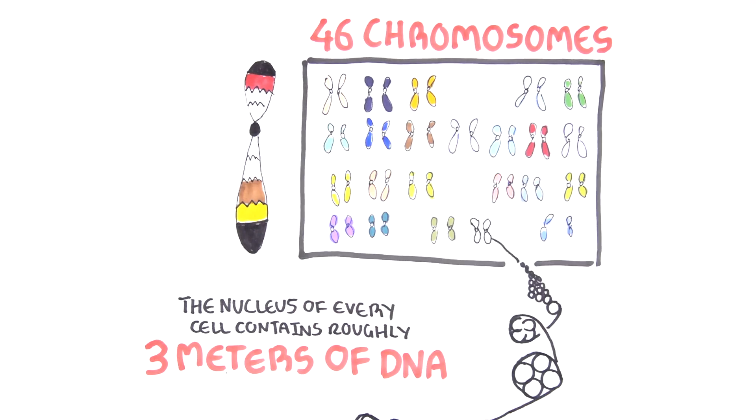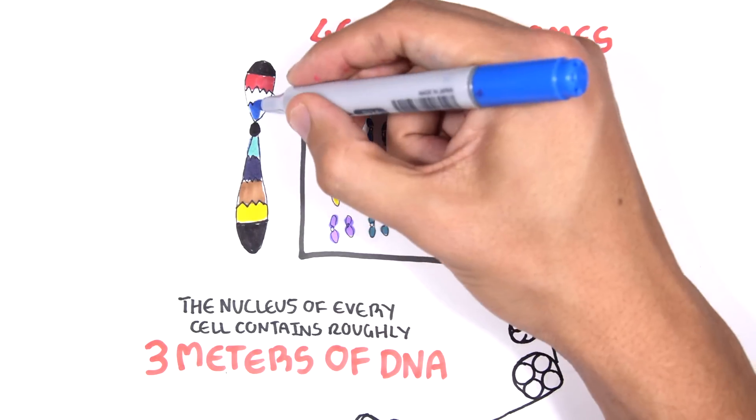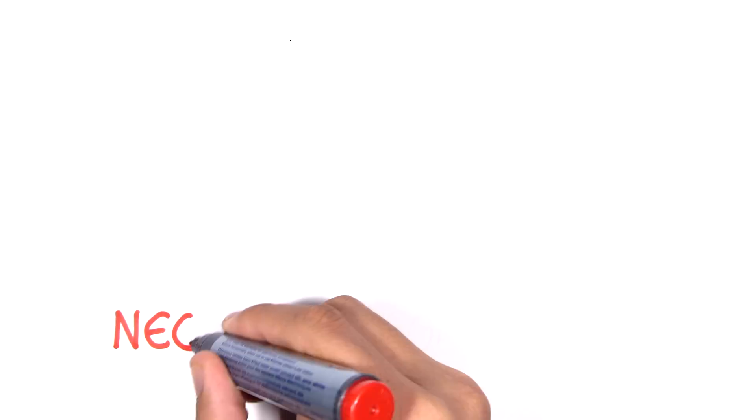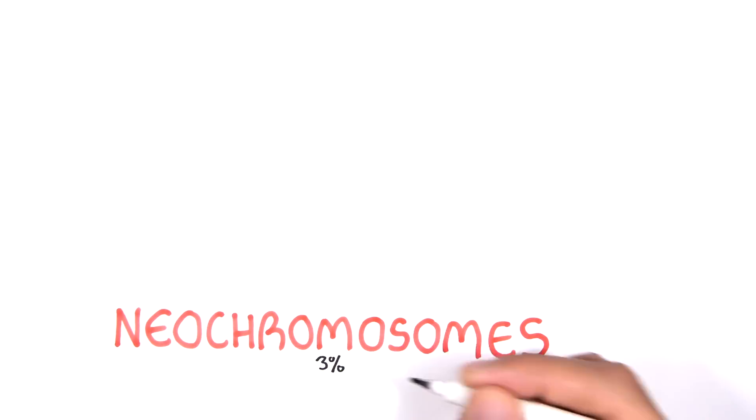And just as there was nothing accidental about the creation of the creature by Victor Frankenstein, there is nothing accidental about the creation of this DNA monster by the cancer cell. Neochromosomes, as they are called, exist in around 3% of cancers.